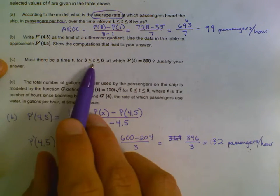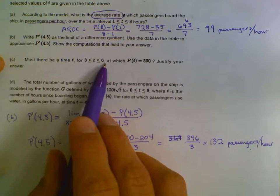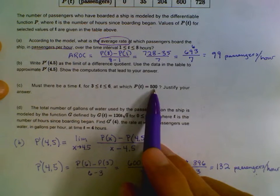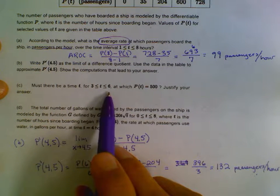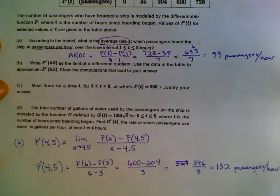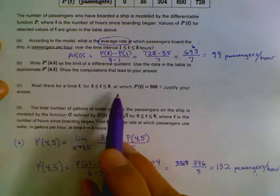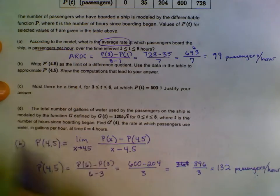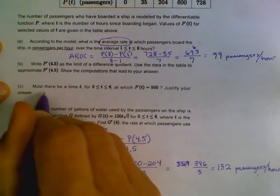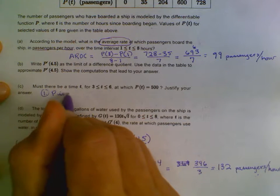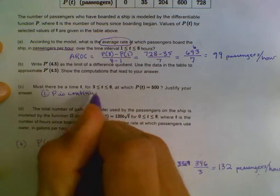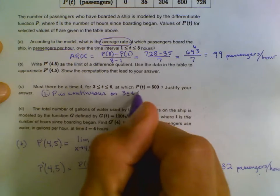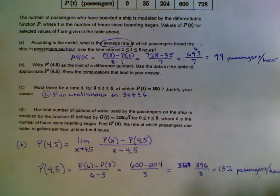Must there be a time between 3 and 6 at which P of T equals 500? Justify your answer. Well, this is a perfect example of the intermediate value theorem. First off with the intermediate value theorem, we have to say that the function P is continuous. So we're going to say P is continuous on 3 to 6. P is continuous. You have to say that.